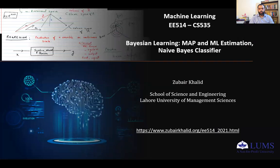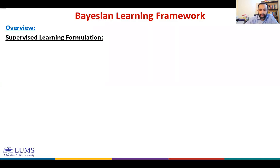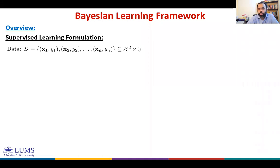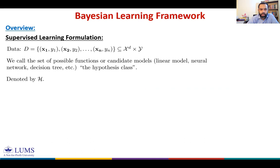Bismillahirrahmanirrahim, assalamu alaikum. Let's continue our discussion on Bayesian learning. In the previous video we introduced the Bayesian learning framework. Let's formalize the concept in the context of supervised learning. We have a dataset D with n training samples, where each example is in d-dimensional space, and for each sample we have an associated label. We call the set of possible functions or candidate models the hypothesis class, which can include linear models, neural networks, decision trees, or different models relating input and output — denoted as H.